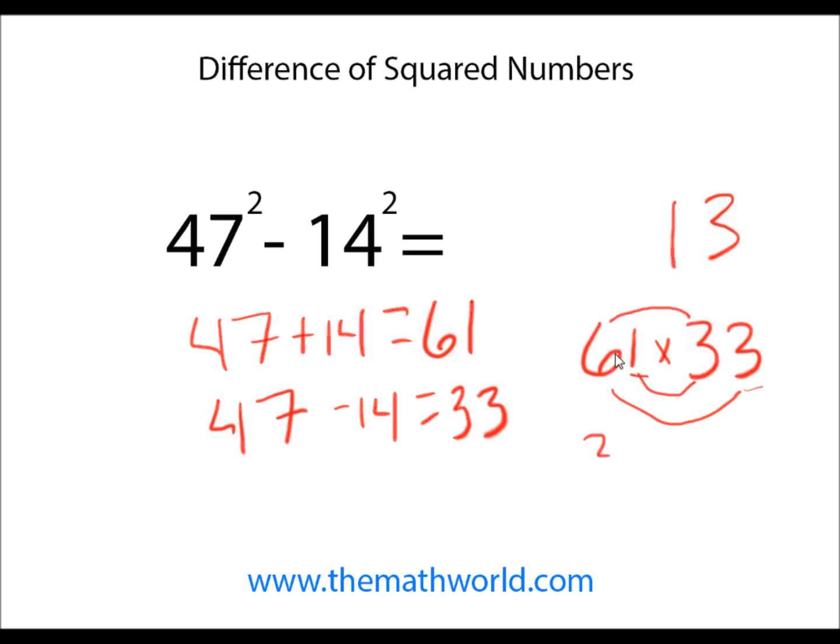And then multiplying these two, six times three is 18, plus my two is 20. However you like to multiply two-digit numbers is fine. But 47 squared minus 14 squared is 2013.